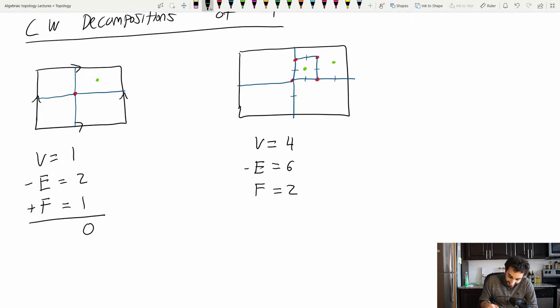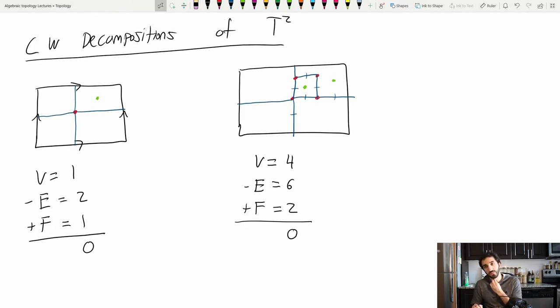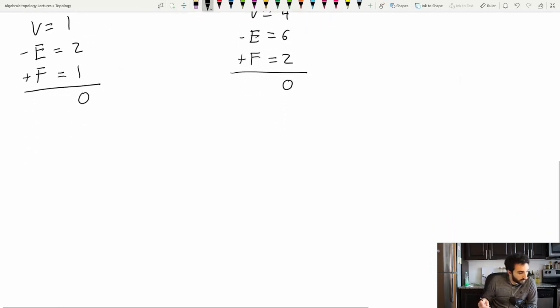So add up the vertices, subtract the edges, add the faces. Vertices plus faces is two minus edges gives me zero. So this seems to be an invariant of the surface type. Let's define it first, in general, and then prove that it really is an invariant. So here's a definition.